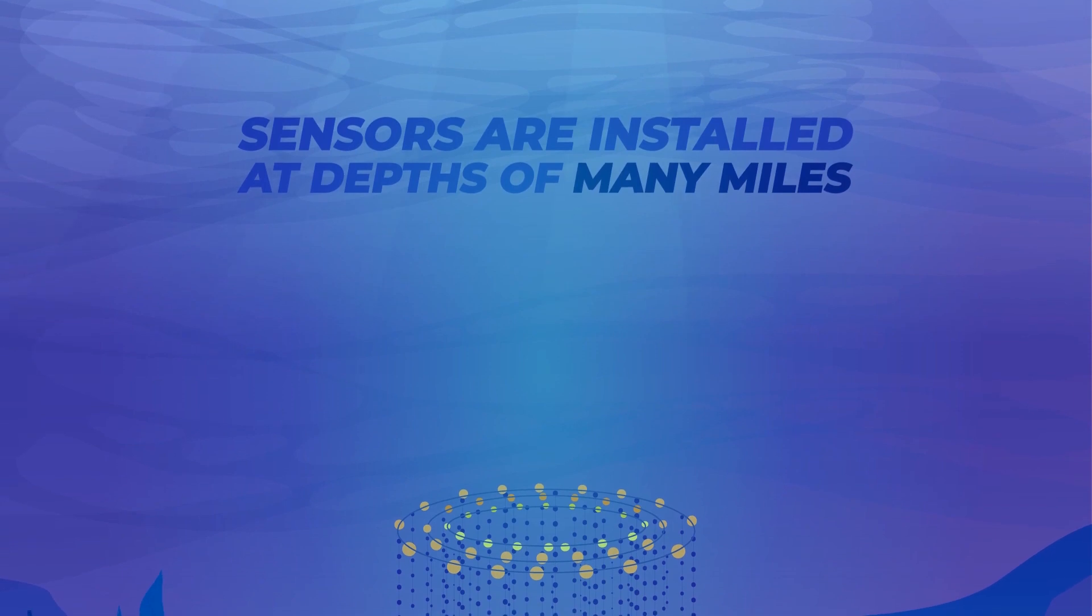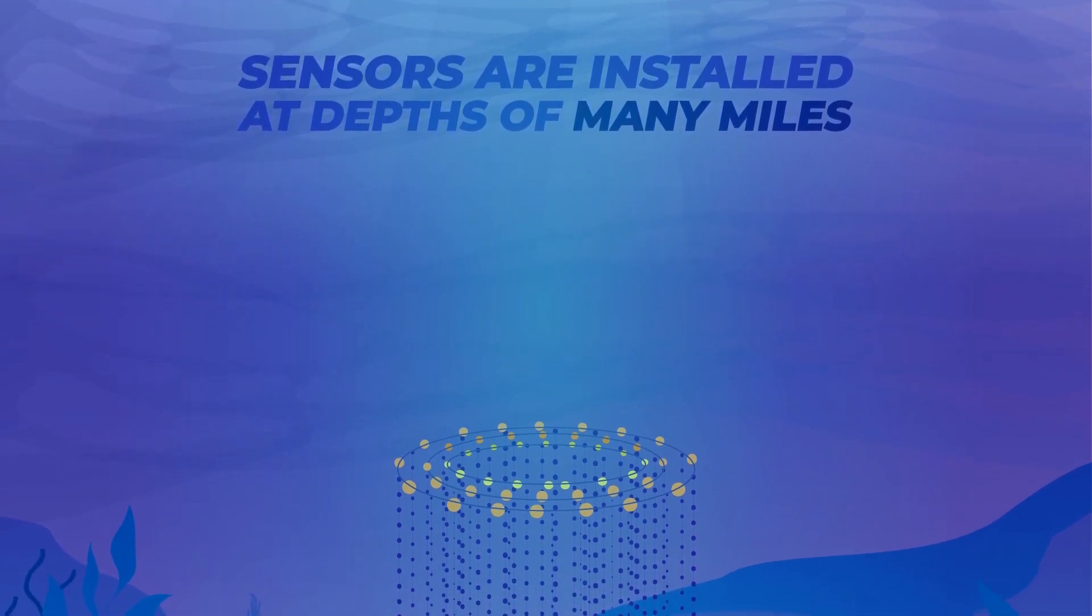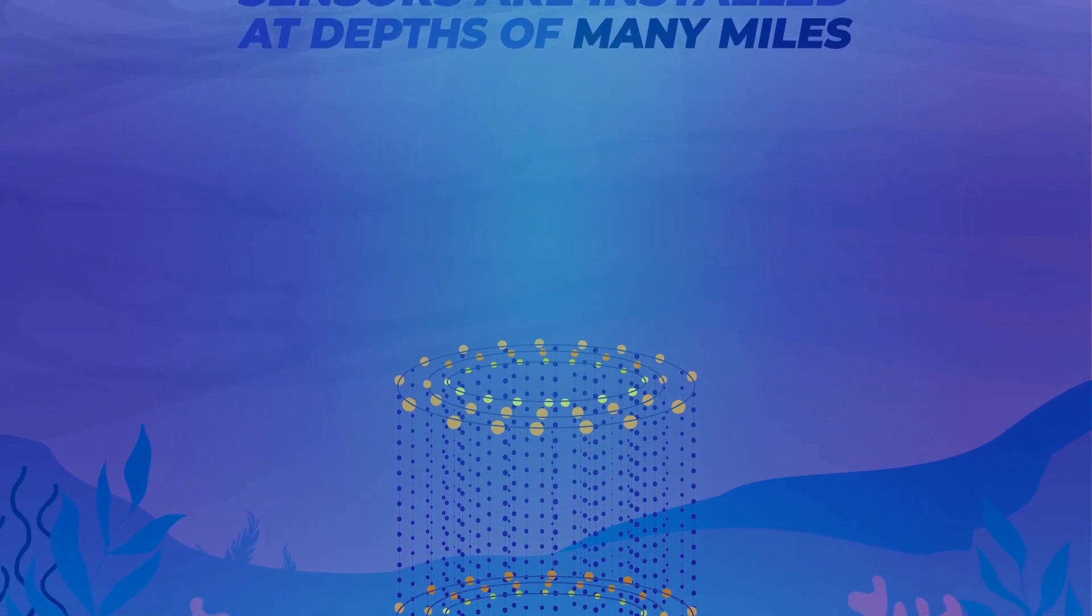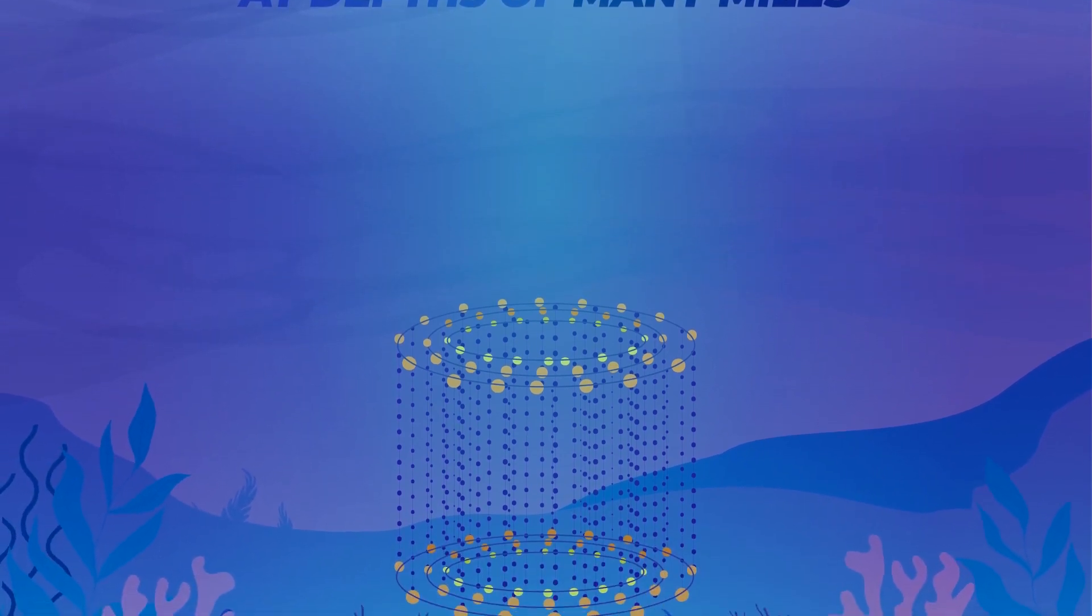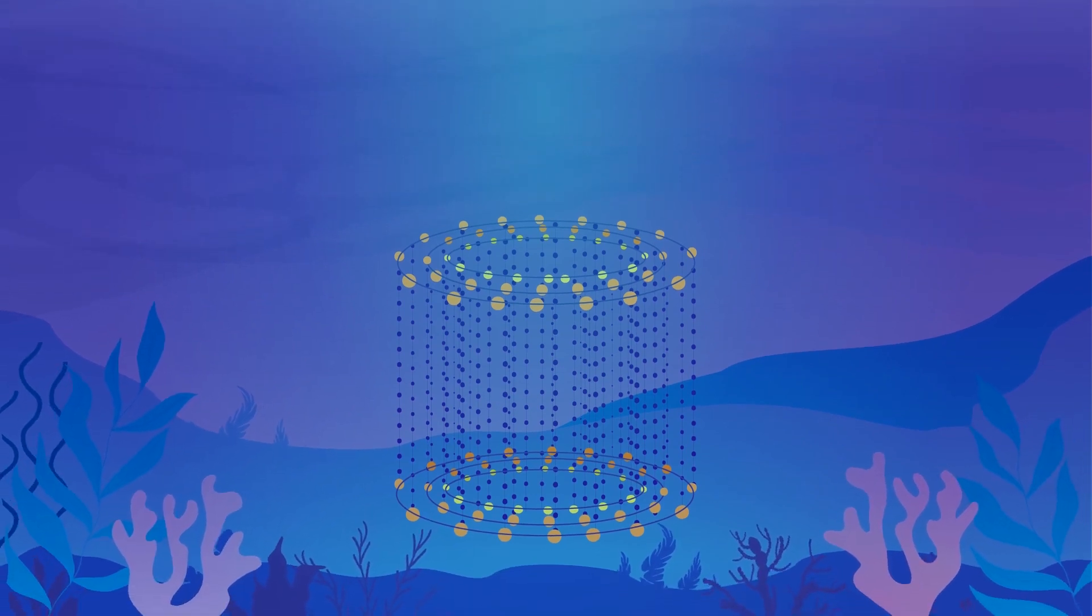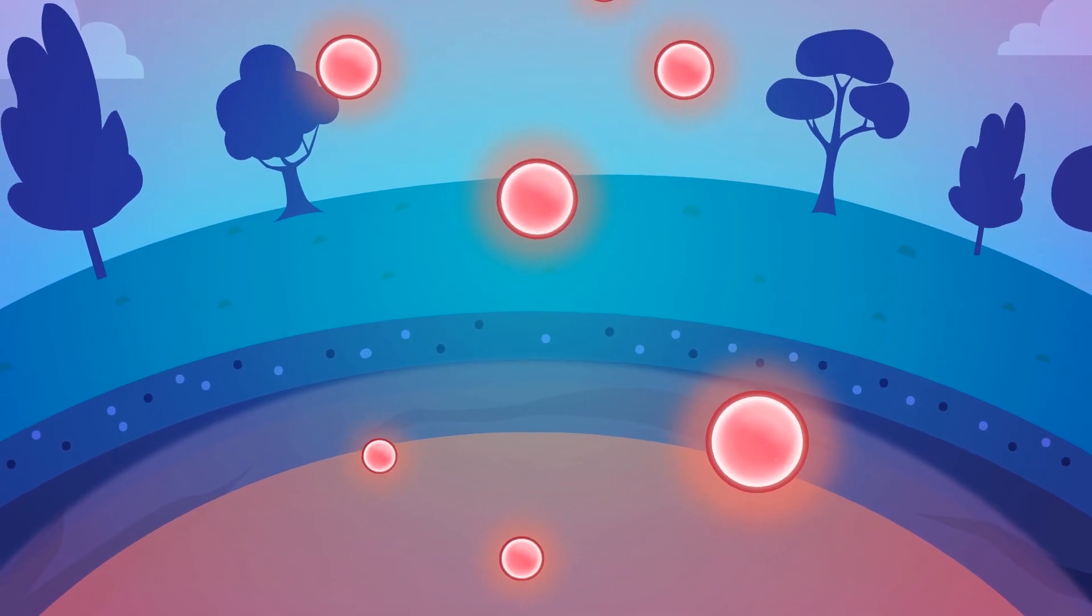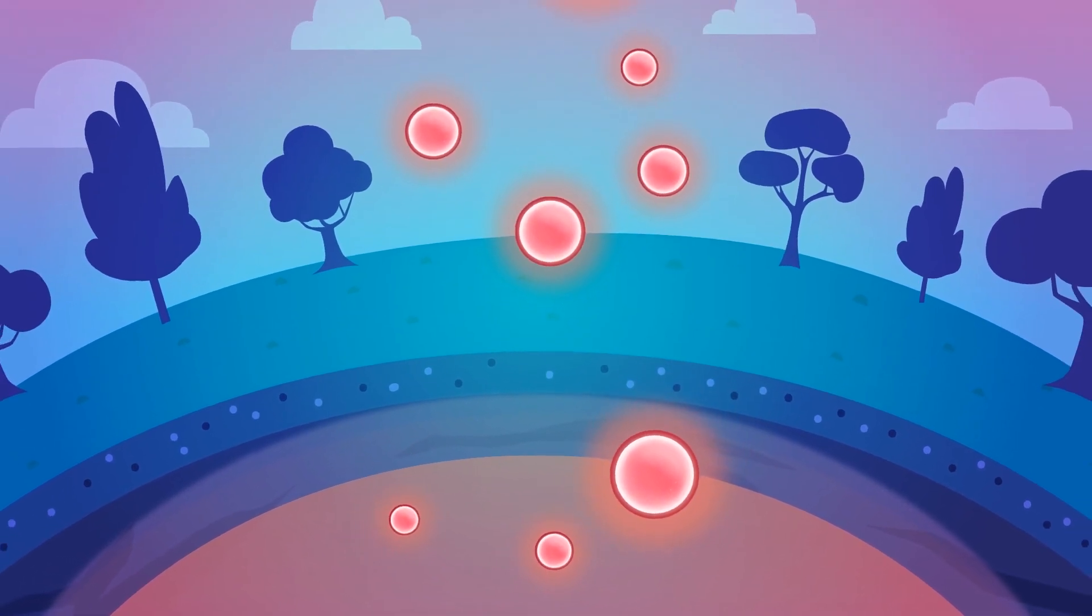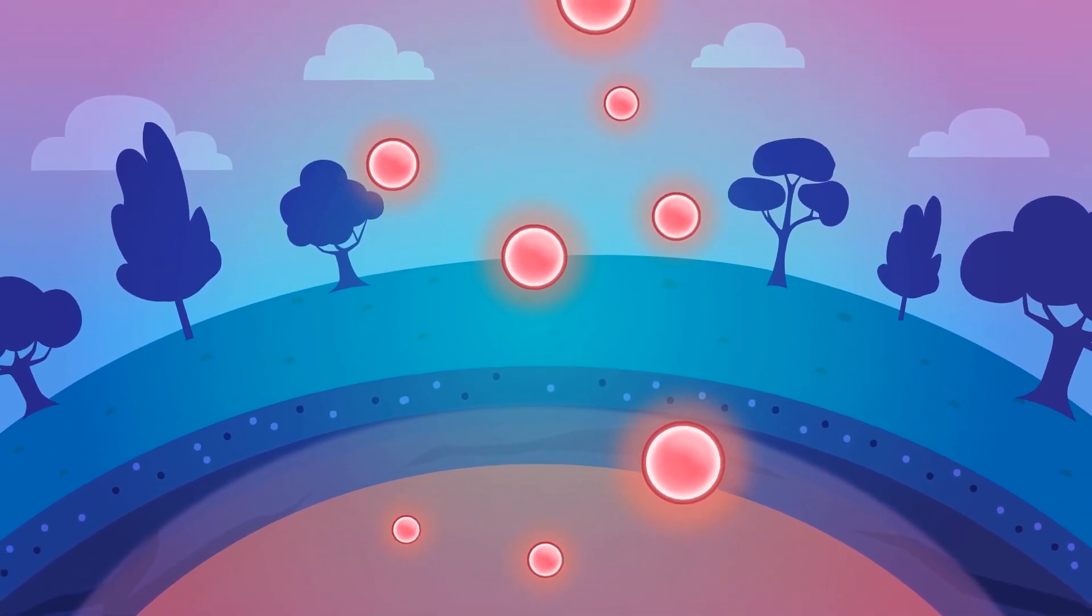The sensors are installed at depths of many miles because this eliminates any interference from other light sources. And the Mediterranean is perfect because of the optical properties of the water and the closeness to shore to allow the huge data transfer to land that's needed. Crucially, only neutrinos can pass through the center of the Earth so all the sensors are pointed down instead of up to eliminate any other interference.